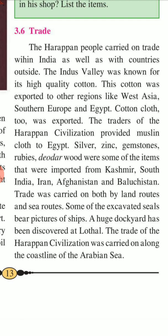Silver, zinc, timber, rubies, and sandalwood were some of the items that were imported from Kashmir, South India, Iran, Afghanistan, and Baluchistan. The trade was carried on by both land routes and sea routes.